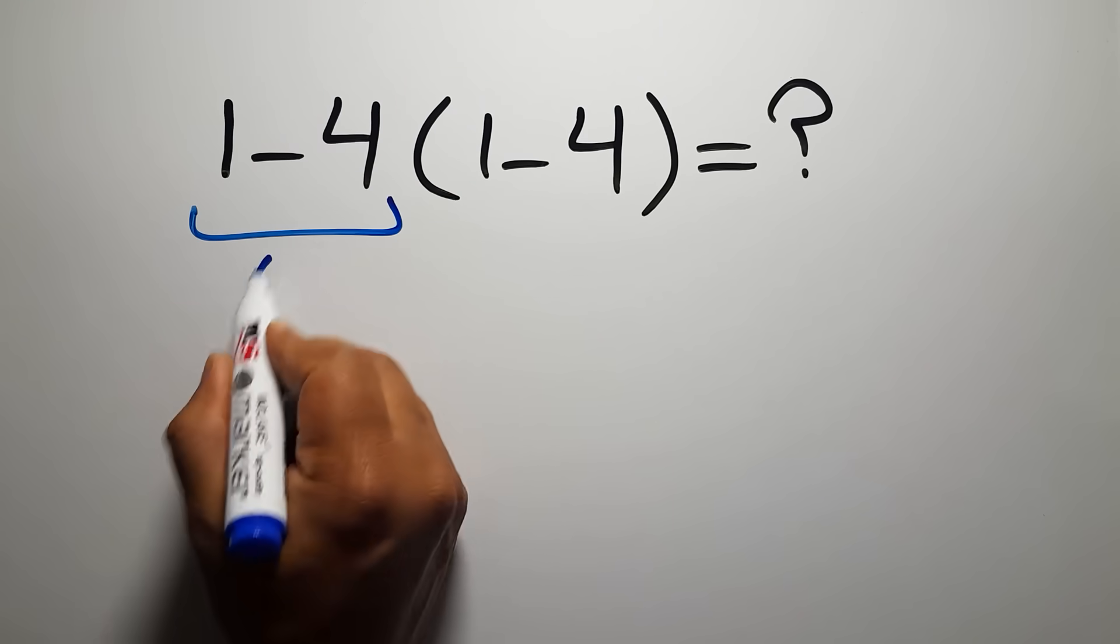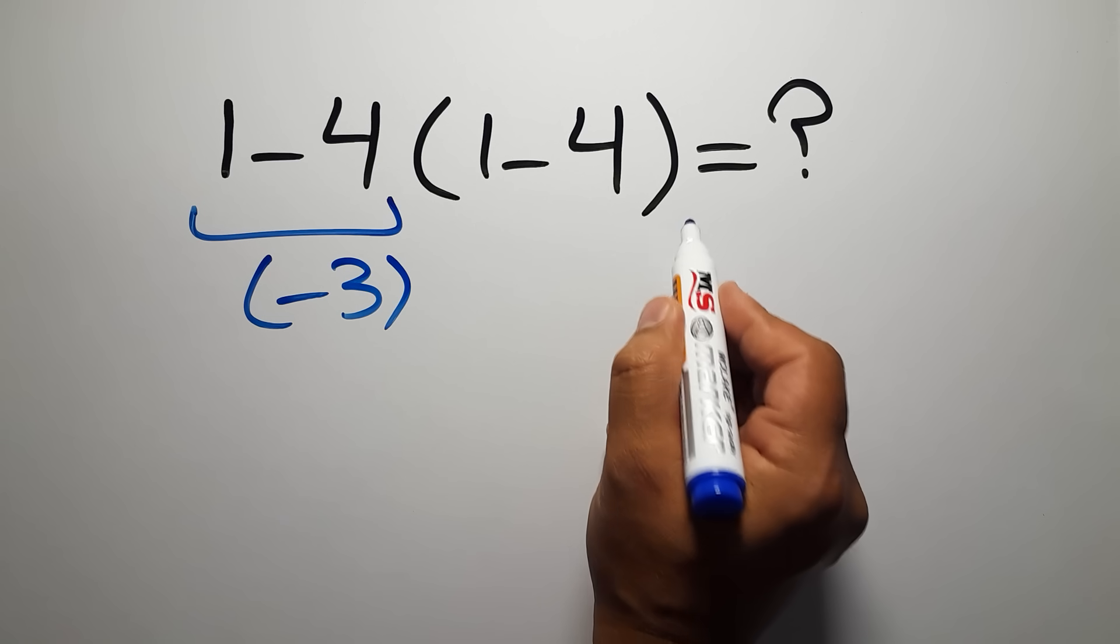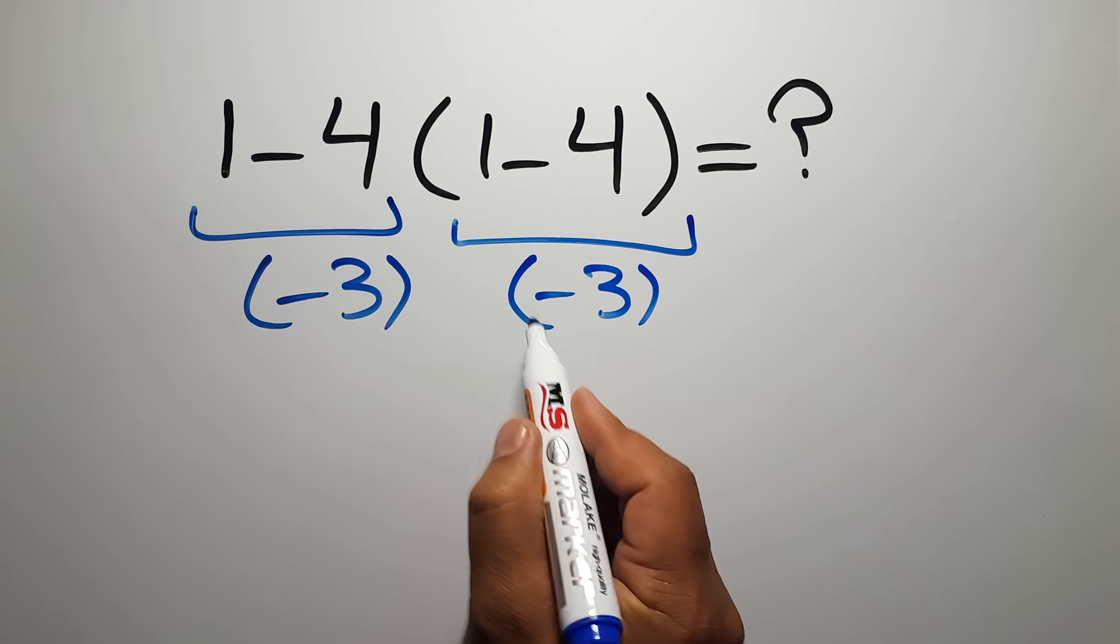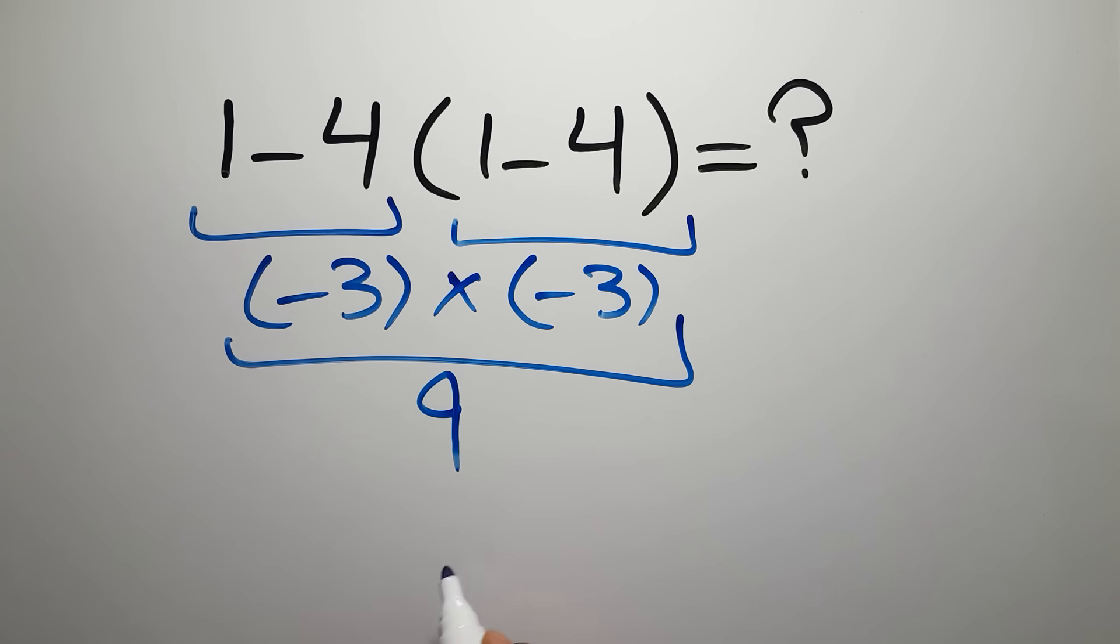1 minus 4 equals negative 3, and here again we have 1 minus 4, so negative 3 times negative 3, which equals 9. But this answer is not correct because, according to the order of operations, first we have to do parentheses, then exponents, then multiplication or division, and finally addition or subtraction.